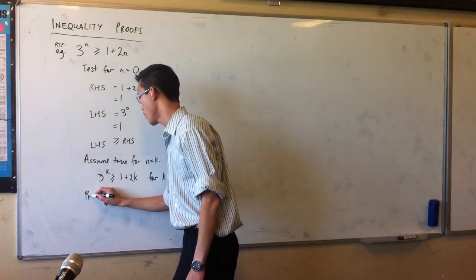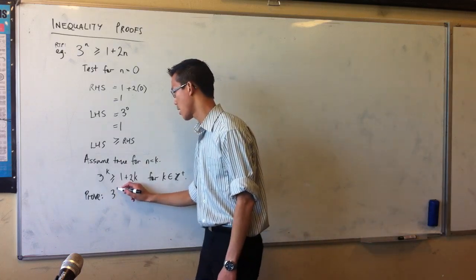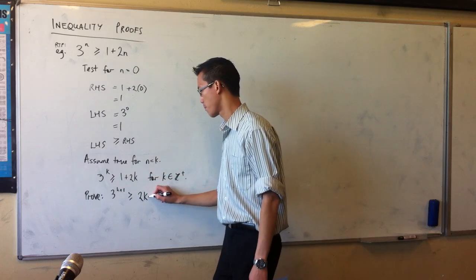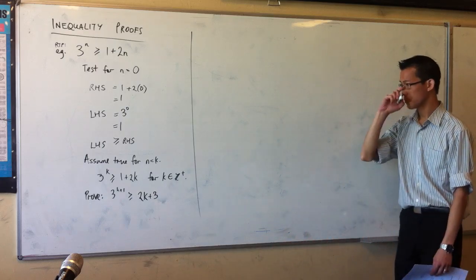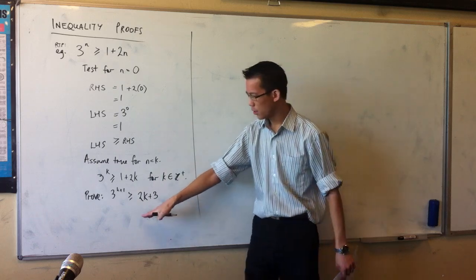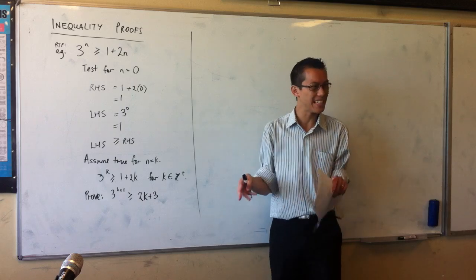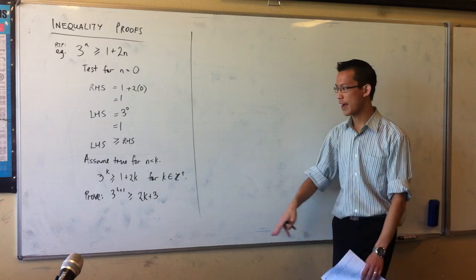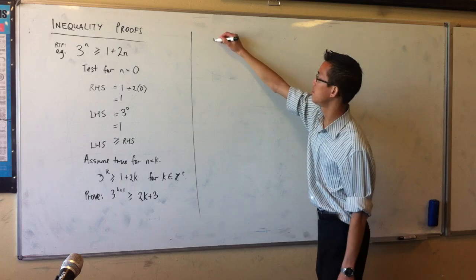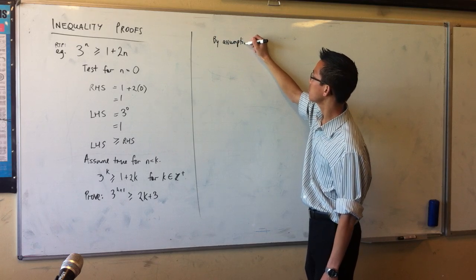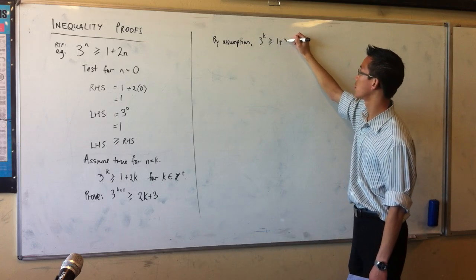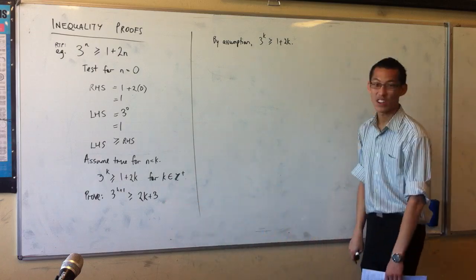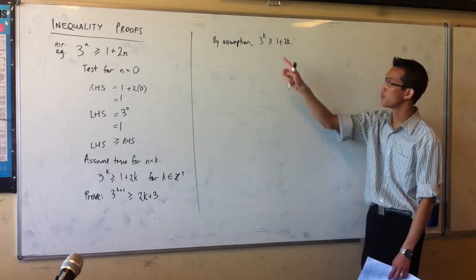Alright. So, now my proof. Prove. What am I required to prove? For k plus 1, right? So I've got 3 to the power of k plus 1, should be greater than or equal to, this is going to be 2k plus 3, right? Now, usually, when we've been proving these, you sort of start with this line, and then you sort of twist it and manipulate it around until you can get something which will let you sub in your assumption. I think you can do that, but with inequalities, I think it will feel more logical if you actually start with your assumption as your very first line.